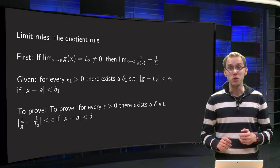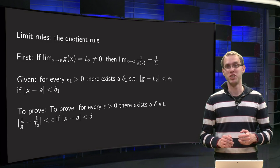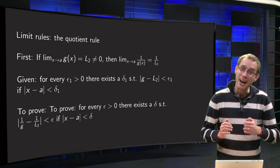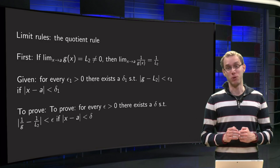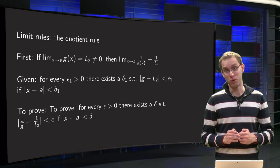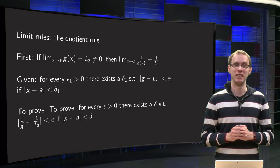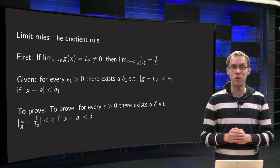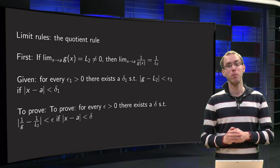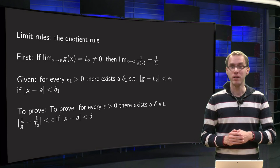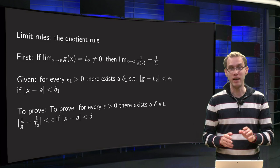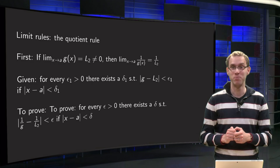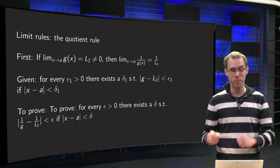You might think that the quotient rule is a straightforward consequence of the product rule. Well, it is a consequence of the product rule, but there is a complication. We need to make sure that we are not dividing by zero. Once we have avoided that problem, proving the quotient rule is just one line, but this first complication causes quite some problems, which we will solve in this video.